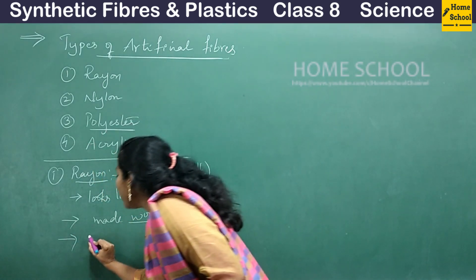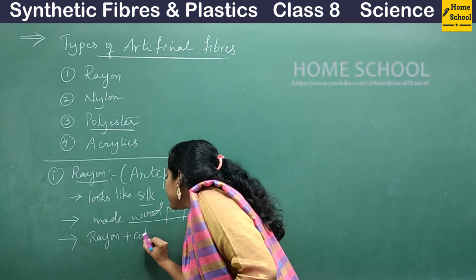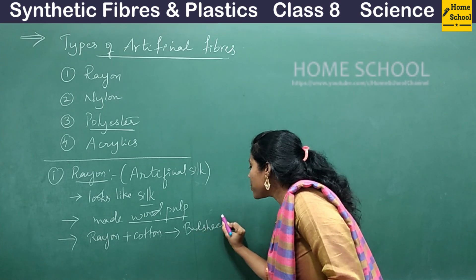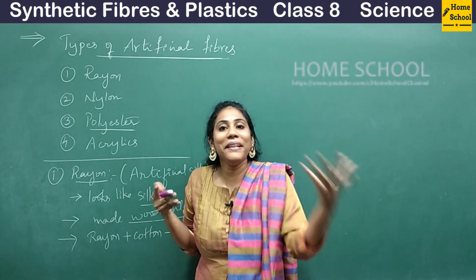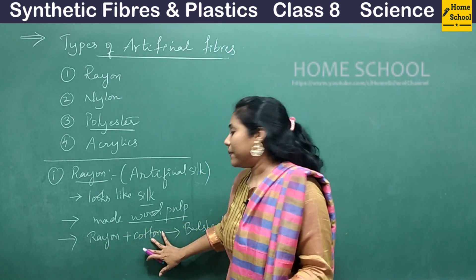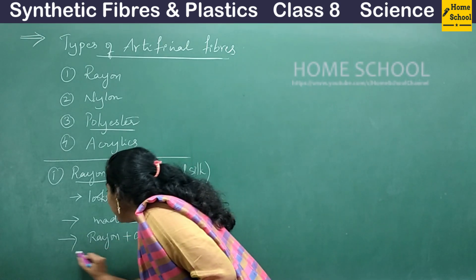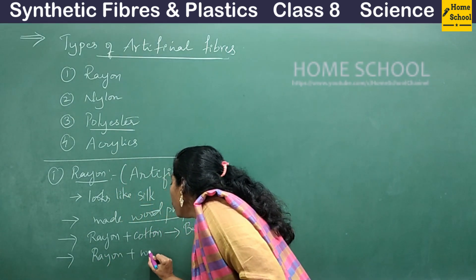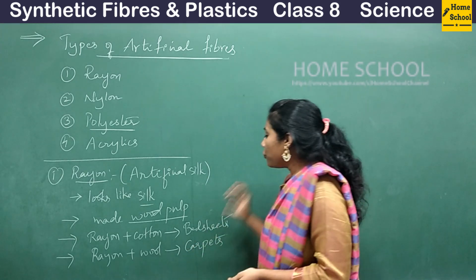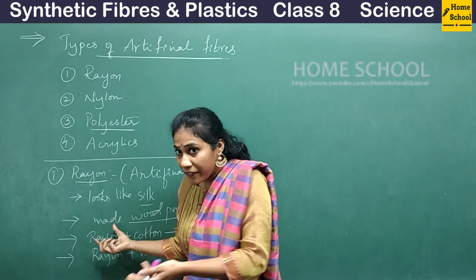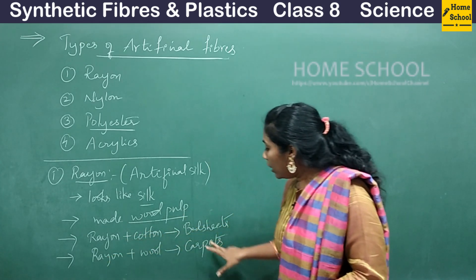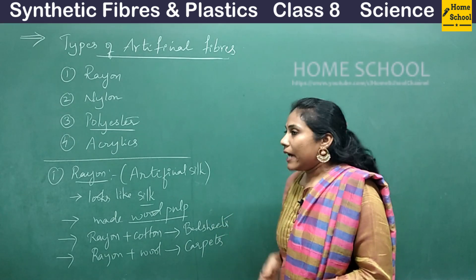When rayon is mixed with cotton, it can be used to manufacture bed sheets. When you touch your bed sheet at home, you don't feel it is completely cotton — it feels slightly soft like silk too. That's because rayon fibers are mixed with cotton fibers. When rayon is mixed with wool, that fabric can be used for making carpets. So in bed sheets, rayon is mixed with cotton, and in carpets, it is mixed with wool.